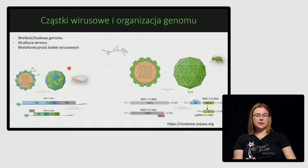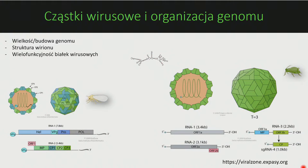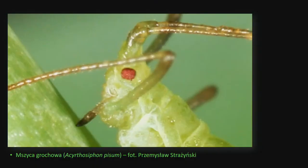Materiał genetyczny wirusów roślinnych znajduje się w kapsydzie białkowym. Niektóre wirusy mają genom jednodzielny, natomiast niektóre są segmentowane. Badamy dwa wirusy: jeden należący do rodzaju toradowirus, drugi do rodzaju kukumowirus. Toradowirus ma genom zbudowany z dwóch nici genomowych, a kukumowirus – z trzech nici genomowych i dwóch subgenomowych. Niektóre szczepy kukumowirusów mają subwirusową cząsteczkę RNA – satelitarne RNA. Ponieważ genomy są małe, białka wirusowe muszą być wielofunkcyjne.